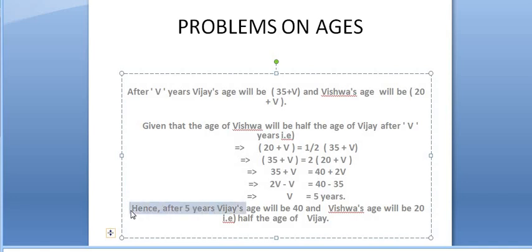After 5 years, Vijay's age is now and Vishwa's age is now — that's why Vishwa's age is now half of Vijay's age.